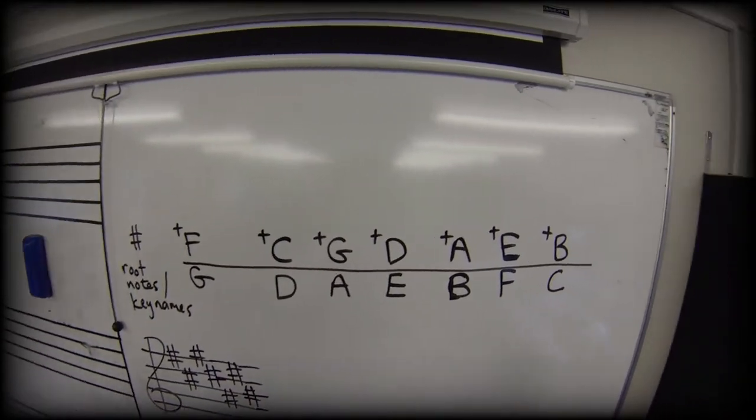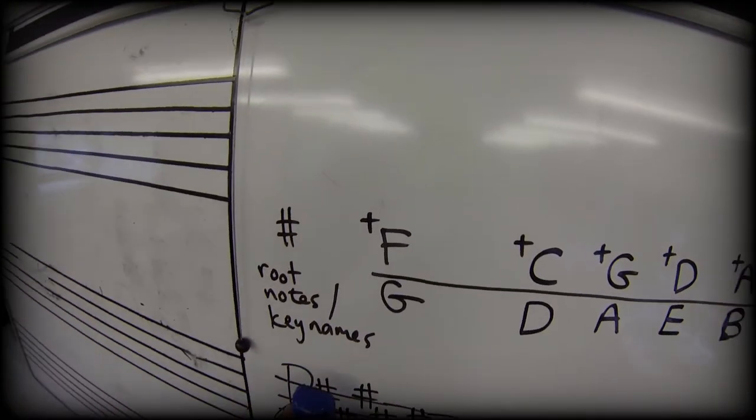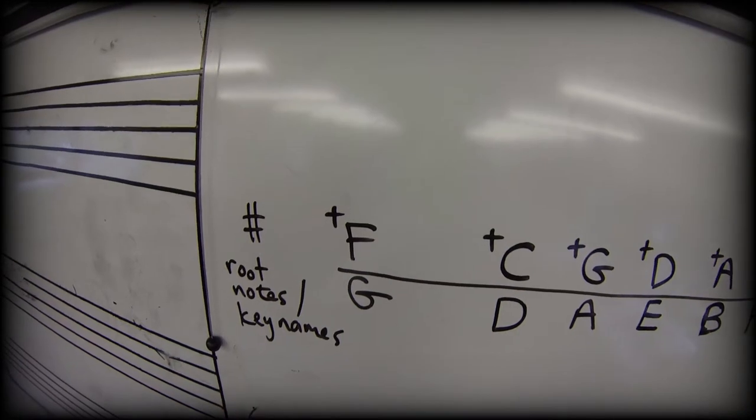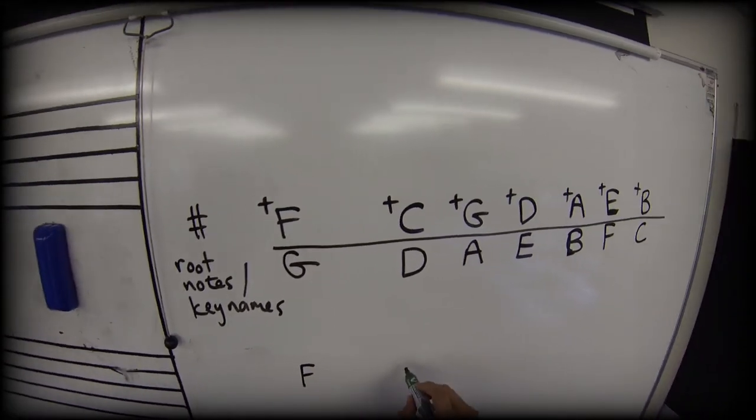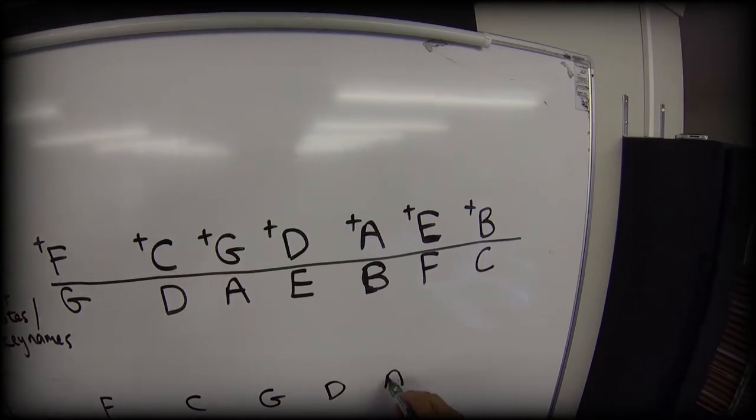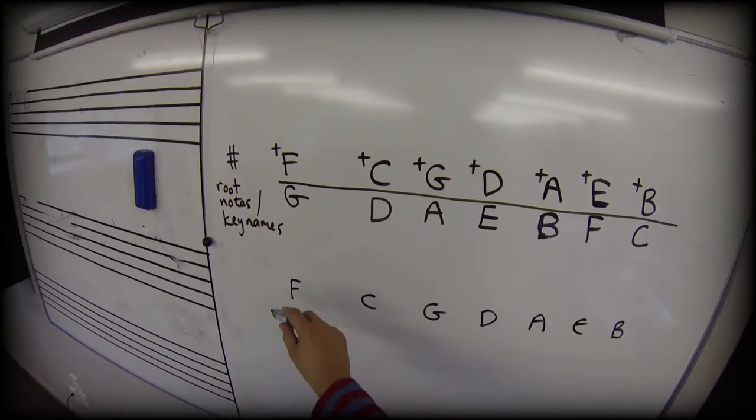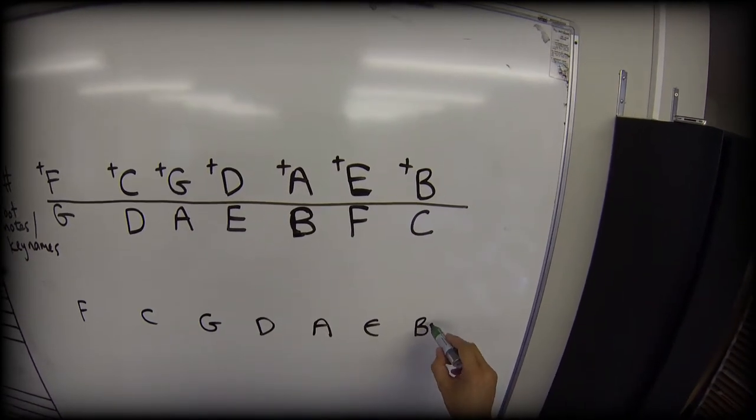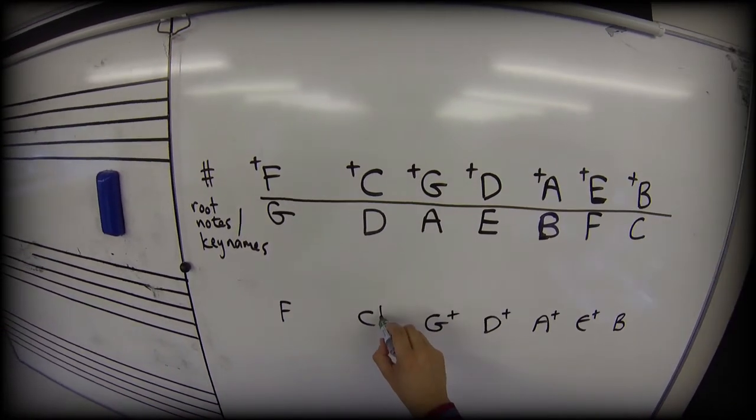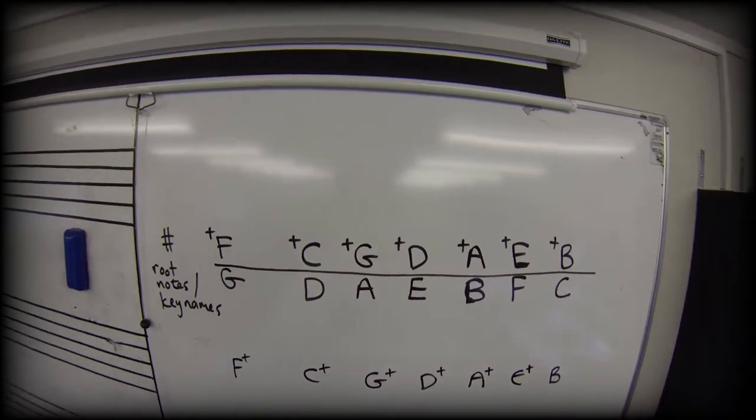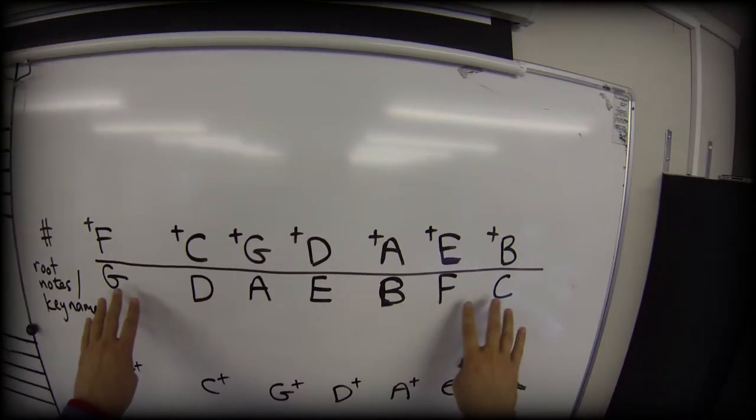So that's one way we can learn all our major scales in relation to what sharps they use. We can also use it for flats as well. And for that, I'm going to rewrite this top row in exactly the same order, but we're going to read it in reverse. Rather than F, C, G, D, A, E, B, we're going to add B flat, then E flat, then A flat, then D flat, then G flat, then C flat, then F flat.